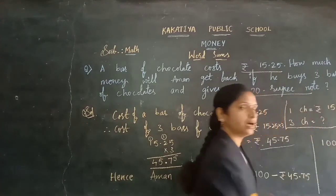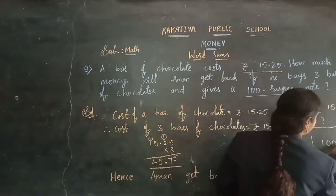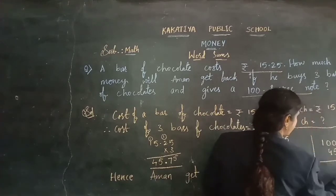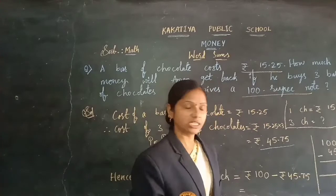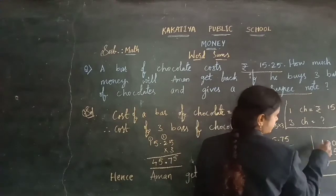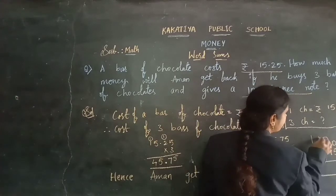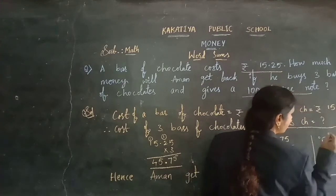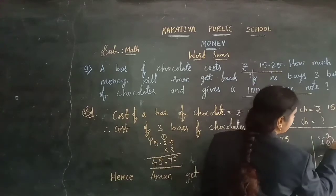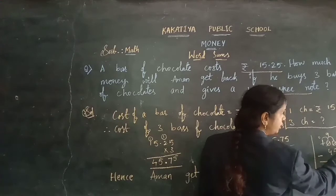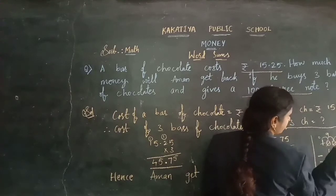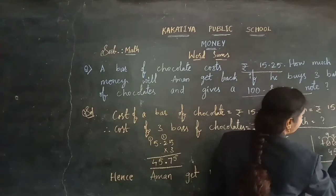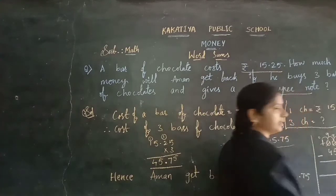Paise are not given in the 100, so you can keep zeros. And here 45 rupees 75 paise — let's subtract. 0 minus 5 is impossible, so we need to take a borrow. Taking the borrow: this 1 becomes 0, this becomes 10. Passing the borrow along, it becomes 9, then 10, again 9, and 10. Now with the borrow, 10 minus 5 — or count from 5 to 10 — gives 5.